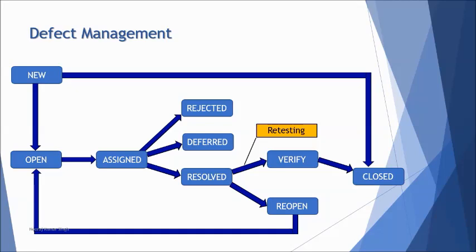This is what we call the defect tracking life cycle. These are template states which can be used as part of the life cycle. If needed, you can additionally have internal statuses or different names for these states to suit your organization's defect management process.